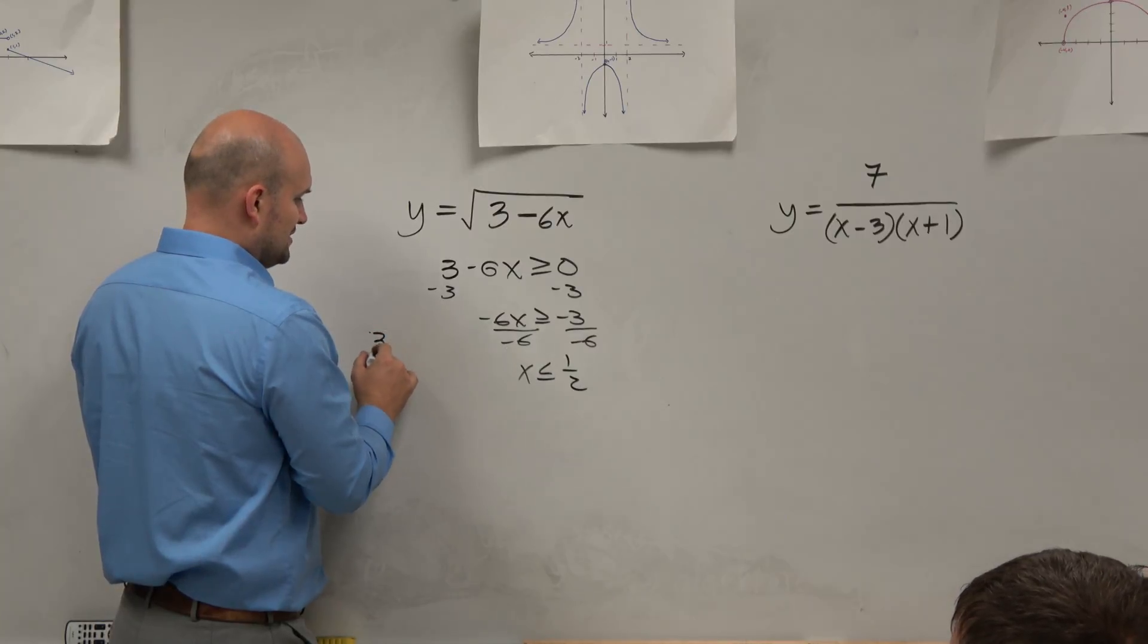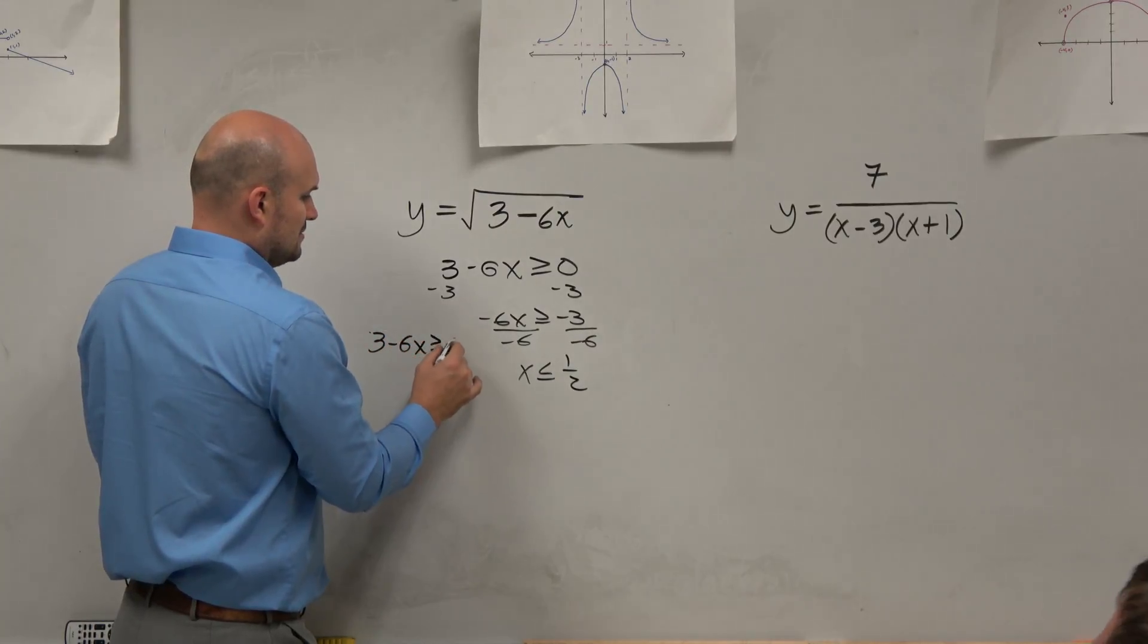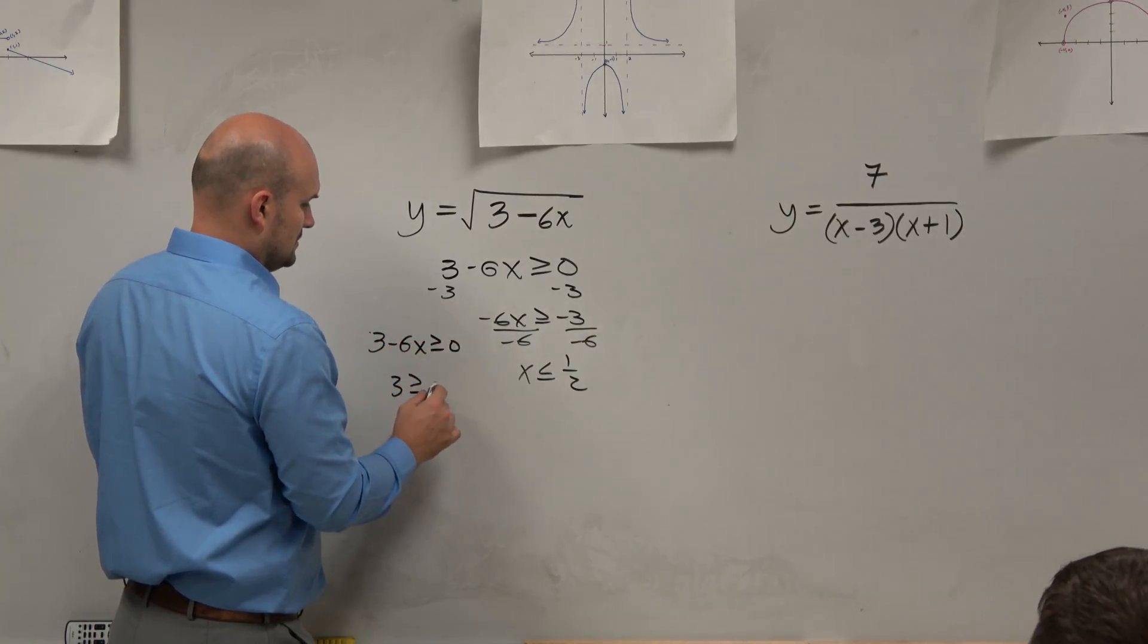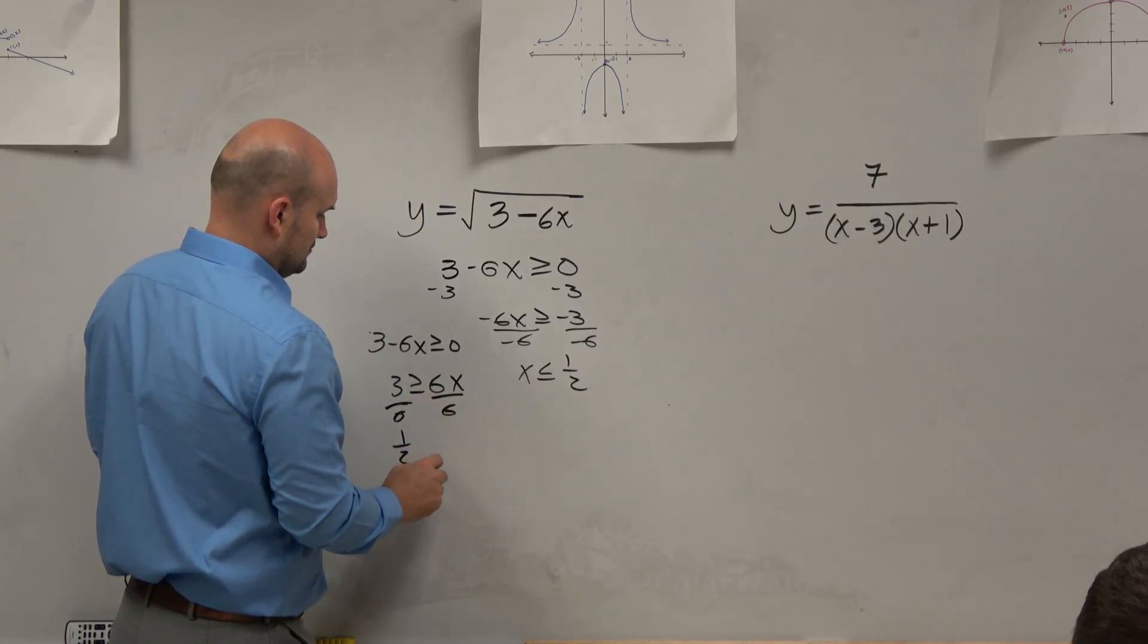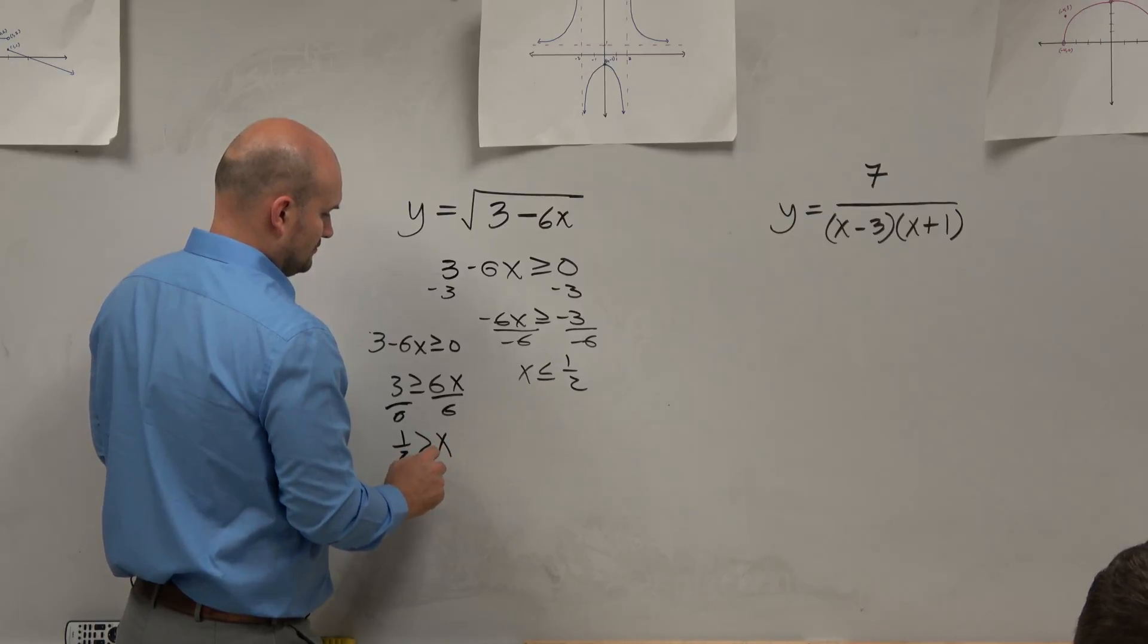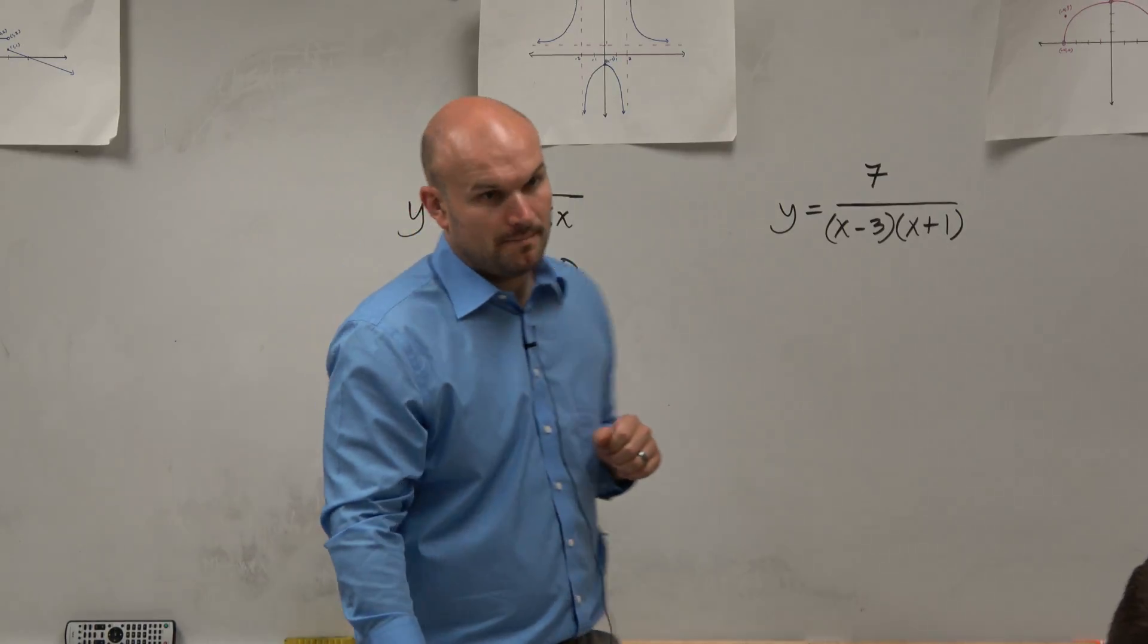If you just would have added the number to the other side, and then you just find out what x is normally, right? If it were to divide by a negative 6. Yep. OK.